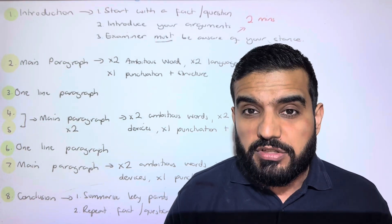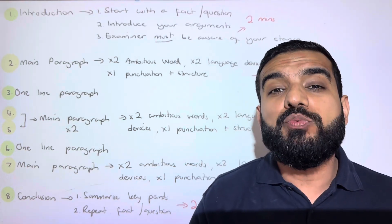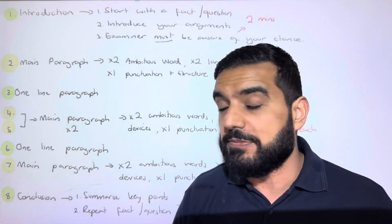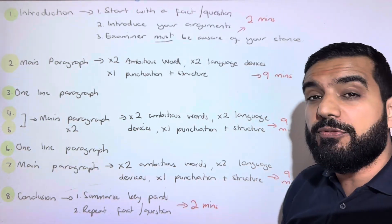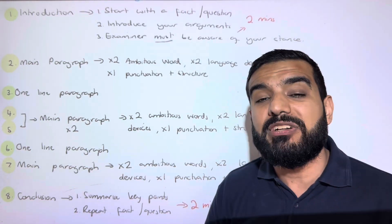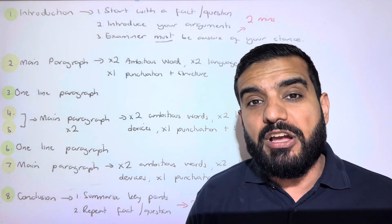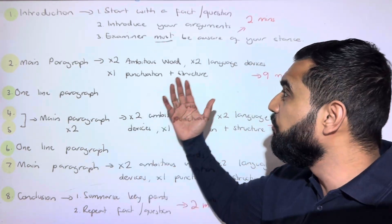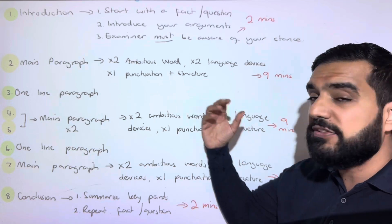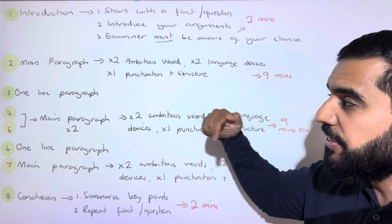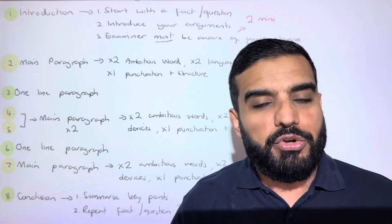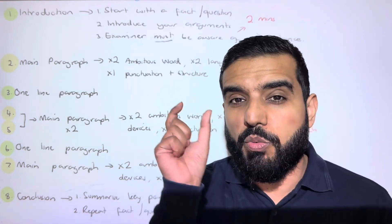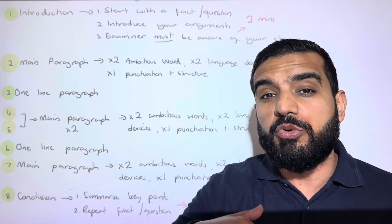Then we move on to our first main paragraph, where we present our first main argument. Here, we have to use vocabulary, language devices, punctuation, and structure. Then we're doing a one-line paragraph. One line means one line—not two and a half, not three, not five. One line, doesn't matter how big or small your handwriting is.